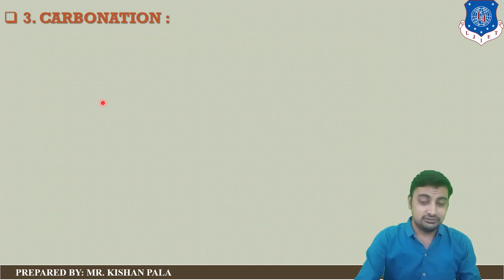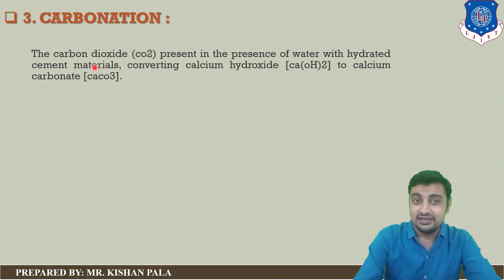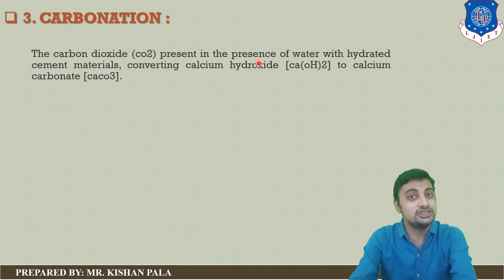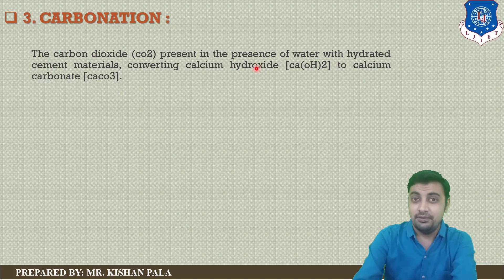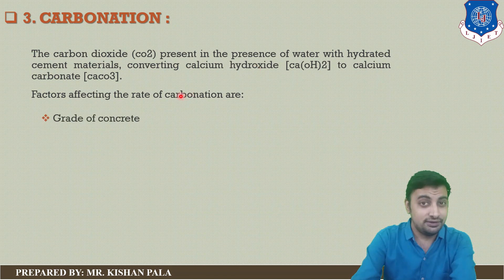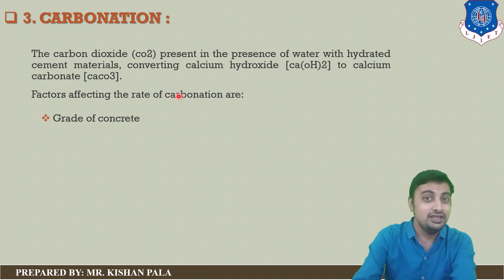Let us discuss carbonation. Carbon dioxide present in water reacts with hydrated cement materials, converting calcium hydroxide to calcium carbonate (CaCO₃). Factors affecting the rate of carbonation include: first, the grade of concrete — whether you are using M20, M50, or M100 — which affects the carbonation rate.